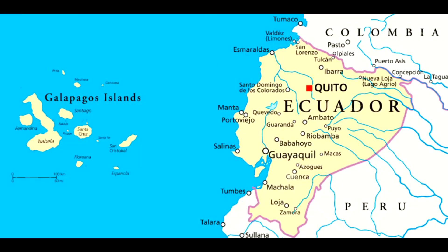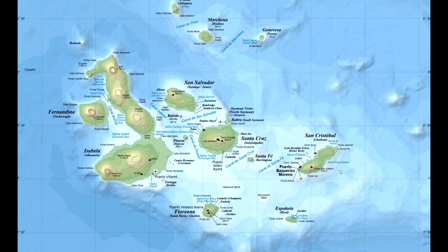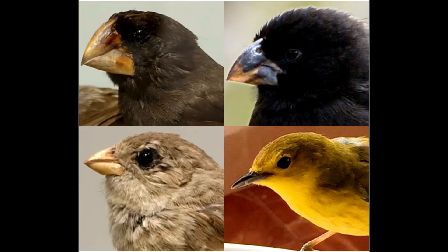Perhaps the most famous part of Darwin's voyage was at the Galapagos Islands, just off Ecuador, where he collected multiple new species of birds. On San Cristobal Island he recorded a mockingbird similar to one he saw in Chile. He then found a different mockingbird on Floriana Island, and yet another on Isabella. He also collected multiple samples of what he thought were blackbirds, grosbeaks, and finches, some of which you can see here.